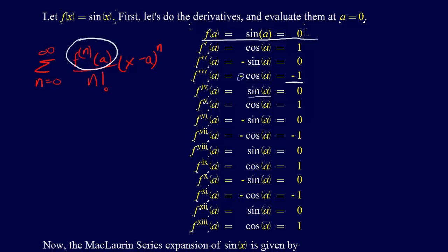So the general pattern here goes 0, 1, 0, minus 1, 0, 1, 0, minus 1. This is what's going to happen to our derivative terms when we expand our series.